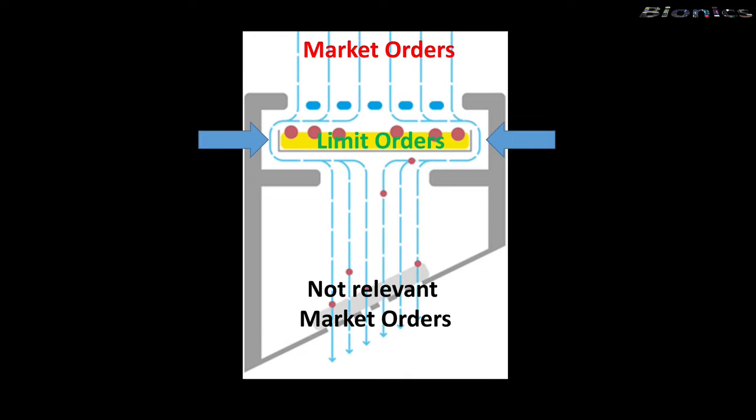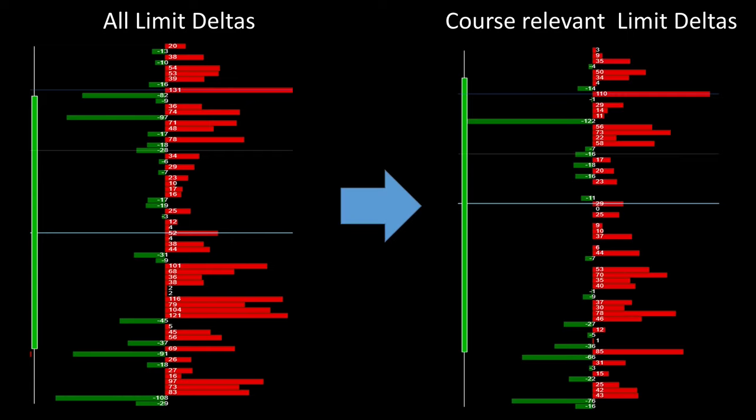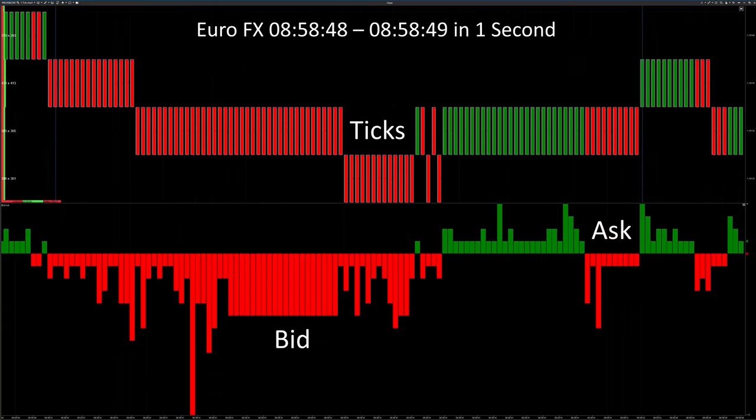Of course, a market order always triggers a corresponding limit order at the same time. But not every limit order is used to collect. And that's why you have to precisely identify the limit orders that are decisive for future price development. On the left side we see all limit orders that have arisen in the market in a delta display. In addition, we see the decisive limit deltas which, in my opinion, trigger a future course relevance.